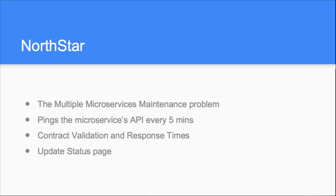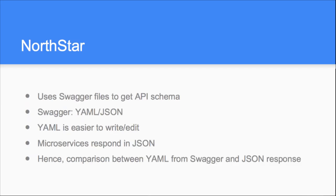How NotStar works: we ping all microservice APIs every five minutes. It's not just a health check to see if you receive a 200 — we also validate that every API is responding as expected, that database calls are going through, and that response times are satisfying the SLAs. All this goes into a status page so customers and different teams can view it. For the pinger to work, I need to know the schema of each API, which I get through Swagger files.